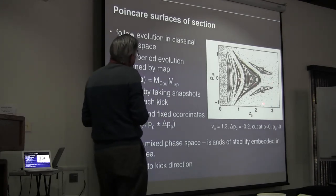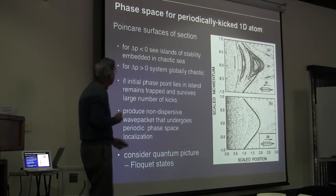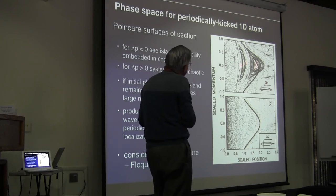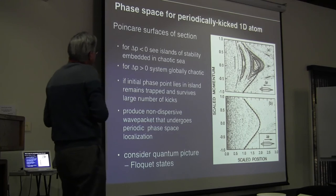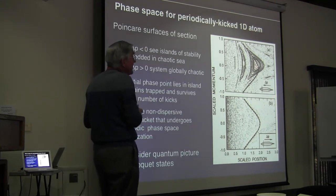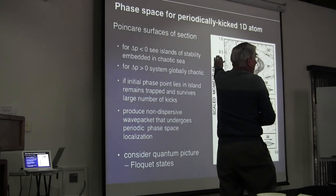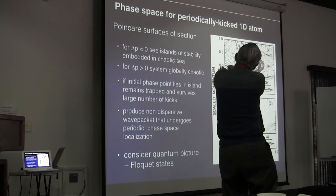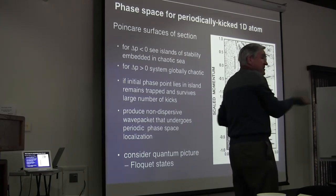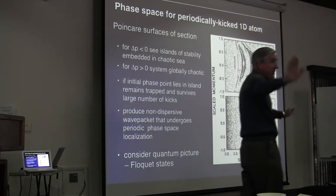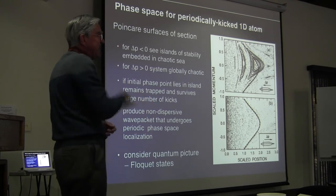Whether or not you get these islands of stability is sensitive to the kick direction. If you kick towards the nucleus, you get these islands of stability. If you kick away from the nucleus, there are no islands of stability — the system is globally chaotic. Why must you kick towards the nucleus to get stability? It's like playing tennis against a brick wall: if you have a ball coming towards you and you hit it towards the wall — the nucleus playing the role of the wall — the ball comes back. If you kick at the right frequency, you can keep the ball in the air. If you kick the ball away from the wall, you don't get stabilization — that's the physical analog of what we're doing.